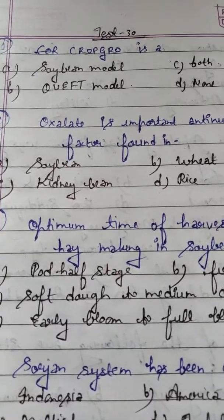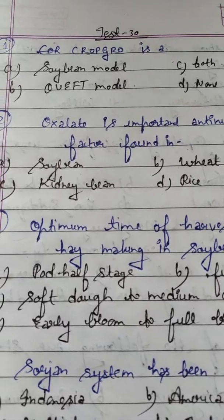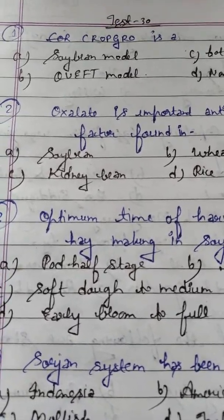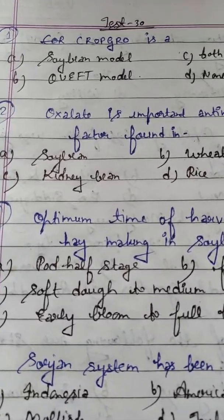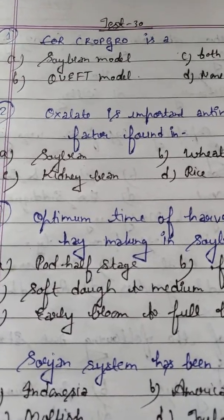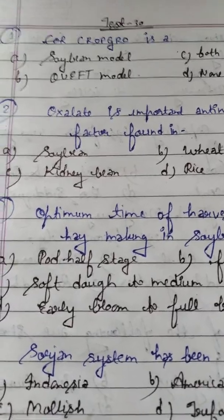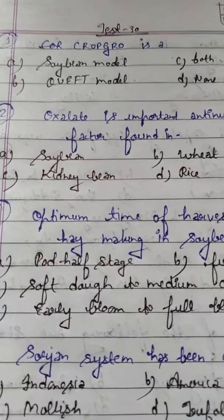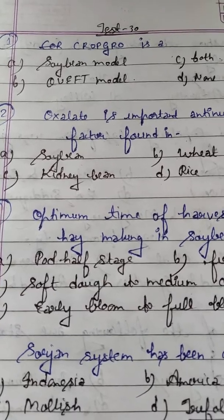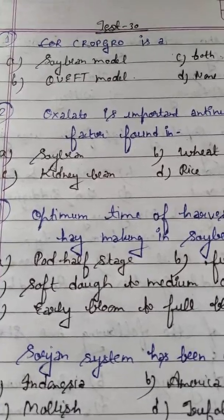This question is from precision farming — also called site-specific farming, GPS-based farming, and variable rate technology. The CROPGRO model is a soybean model and it is a remote sensing based model. The QUEFTS model is used in rice crop — specifically in irrigated rice nutrient management. Please remember it.